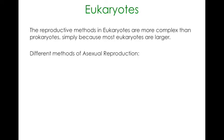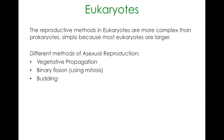If you've got vegetative propagation, which as the name implies, is usually used by plants. Binary fission — just to confuse you a little bit more — is different from the prokaryotic binary fission; it's done using mitosis. Budding, parthenogenesis, and we'll look at spores as well.